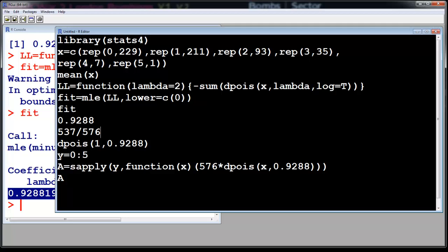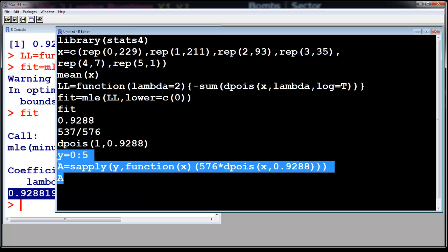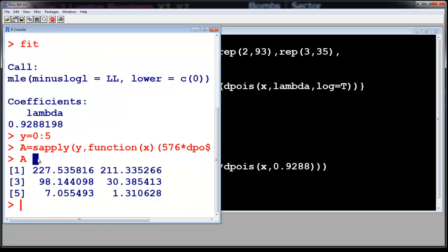Now we will use this 0 to 5 and apply it. So now we feed in the lambda, the values we get is 227, 211, 98, 37, and 1. Let us write it next to the actual observed values.